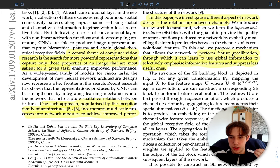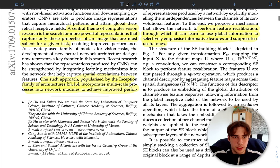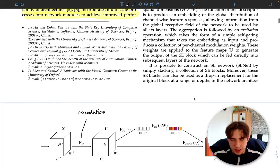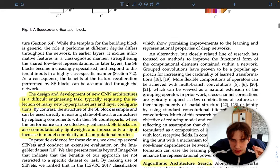They call this process feature recalibration. Through this they can learn to use global information to selectively emphasize informative features and suppress less useful ones. As I said, for example, if you pass a plane, some of the features are more important than the ones that you use for a cat. That's a really sleek and cool idea.